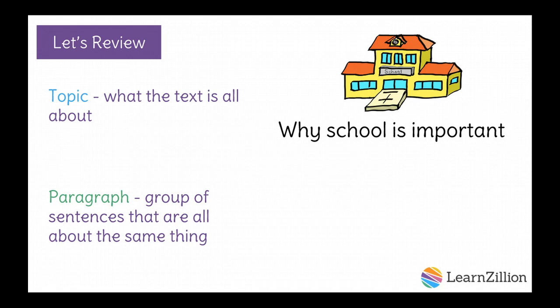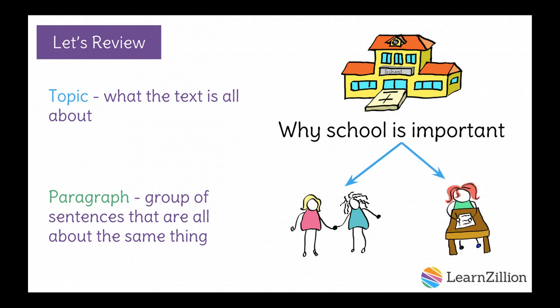For example, in an essay about why school is important, one paragraph might give information about how school is a good place to make friends, and a different paragraph could give information about how school teaches you important things. Notice that each paragraph gives the reader different information about the topic — why school is important.